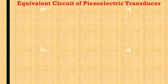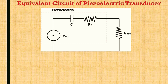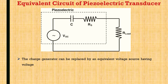This equivalent circuit is then converted into another form where the charge generator q is replaced by an electrical voltage source Voc. The charge generator can be replaced by an equivalent voltage source with voltage Voc equals q divided by Cp, so Voc equals d multiplied by f divided by Cp.